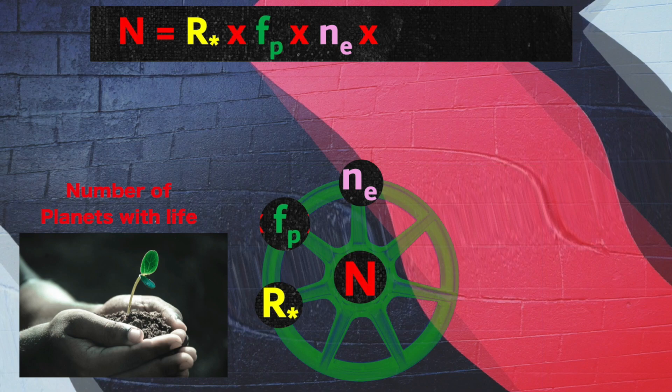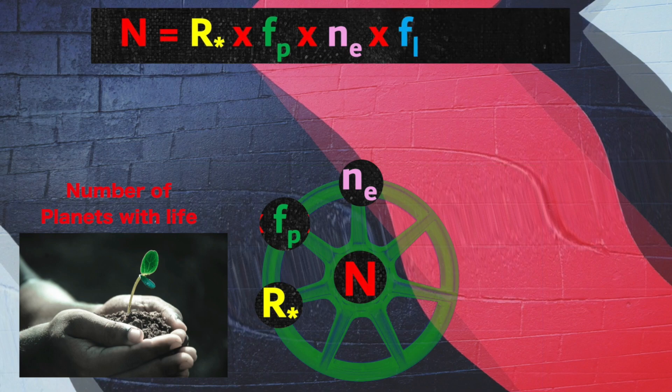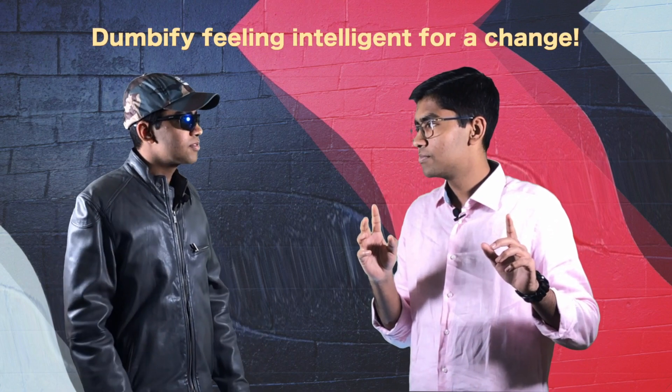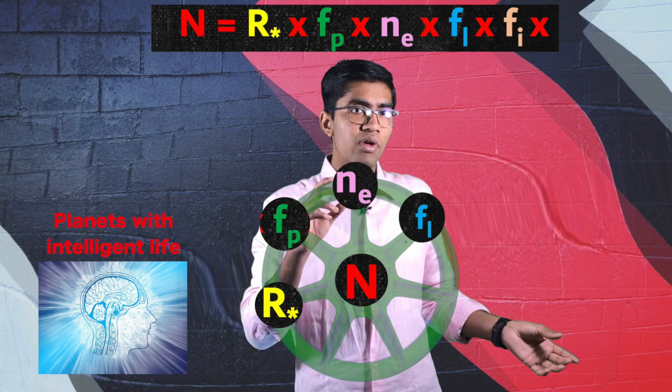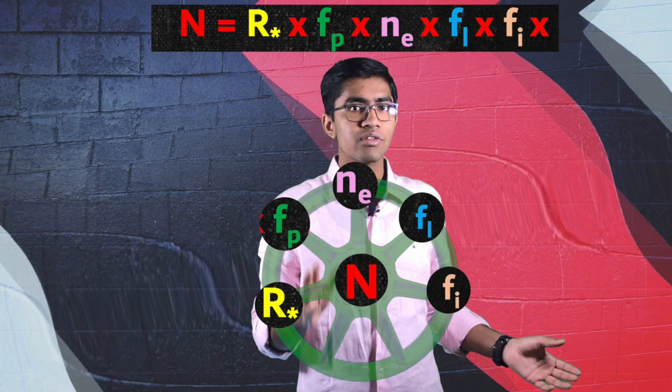We also need to incorporate the success rate of planets in actually developing life, giving us the number of planets on which life actually develops. And since we only care about intelligent life, let's reduce that factor by multiplying it by the fraction of planets on which intelligent life emerges.